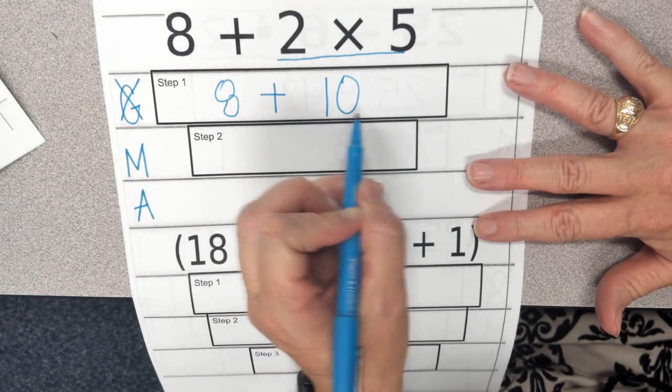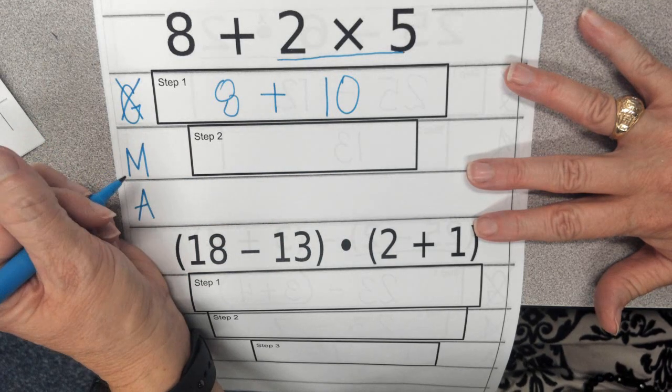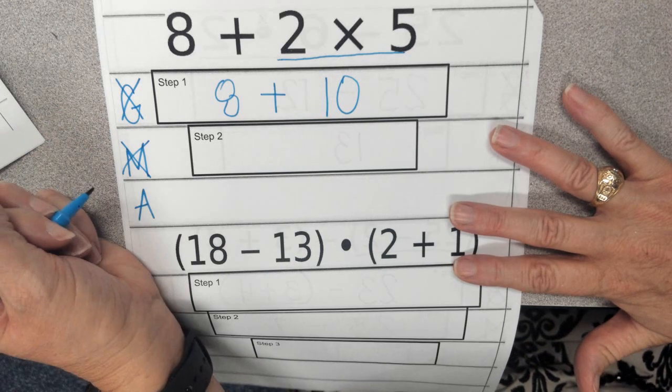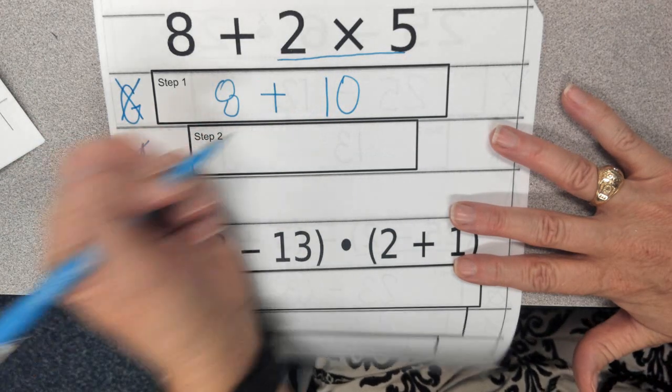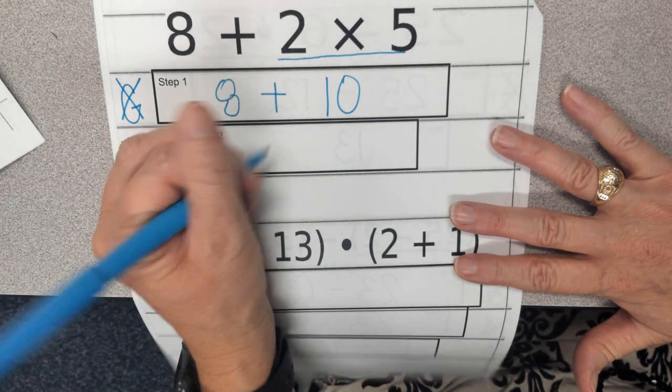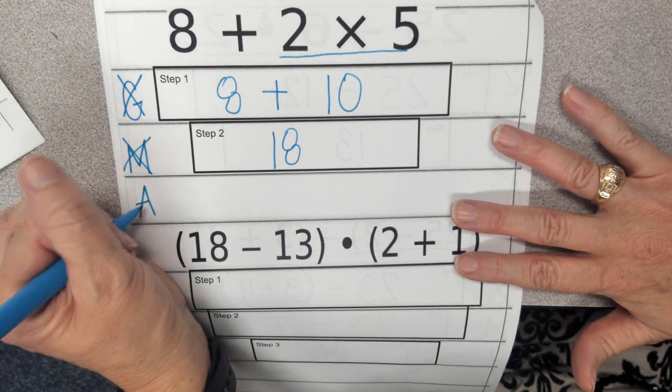So when I look at my problem, I don't have any more multiplicative actions, so I'm going to cross that off, and the only thing that is left is to add. So when I have the number 8 and I add 10, I get the number 18. 18 is my final answer.